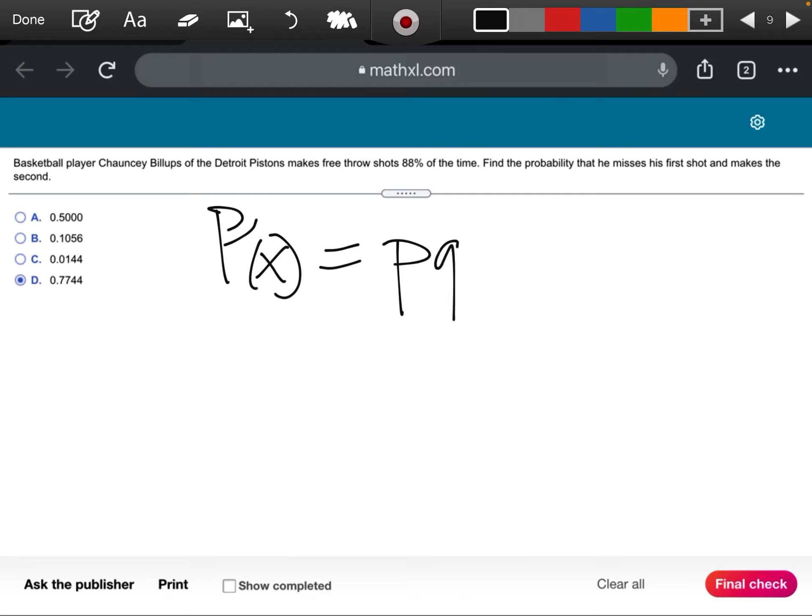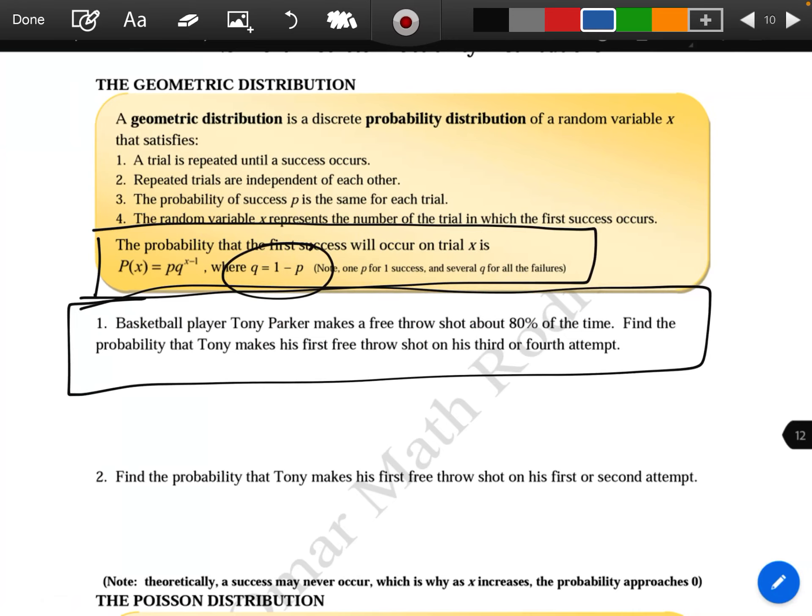Let's come back over here. I'm going to write this down, so P(x) equals p times q to the power x minus 1. The little p stands for the probability that we're going to make our free throw, so that's 88. P(x) equals 0.88.